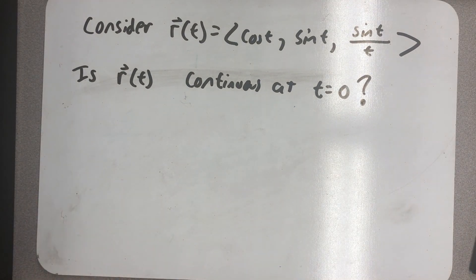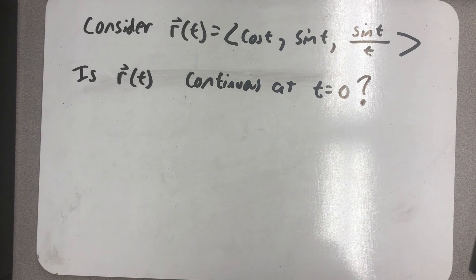Consider the vector function r of t equals cosine t, sine t, and then the k component sine t over t. Is r of t continuous at t equals zero?